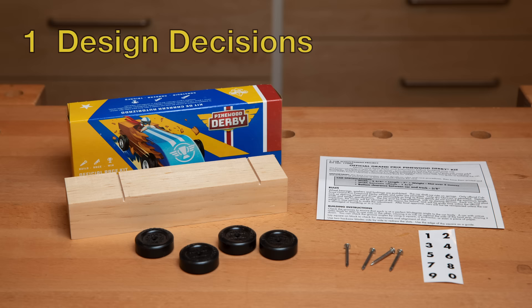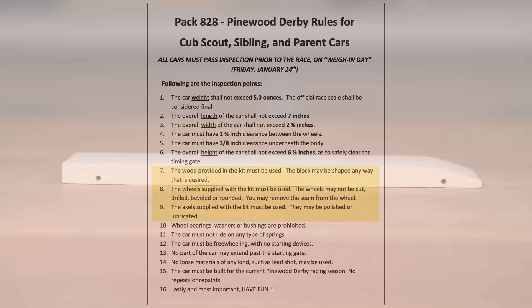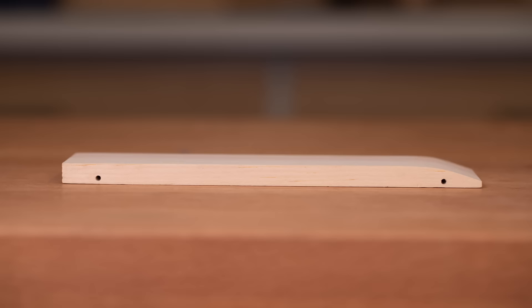Before we start building, we need to make some decisions about the car's design. First, we'll follow all the official Scout rules that come with the car kit. In addition, we'll follow our pack's rules, which say you can only use what comes in the official car kit, and you cannot modify the wheels except for light sanding. We'll pick a simple, flat car shape, which is the easiest to make and uses only basic tools. Although simple, this car can win the race. I'll give you some ideas for fancier designs at the end.